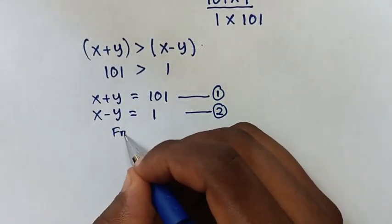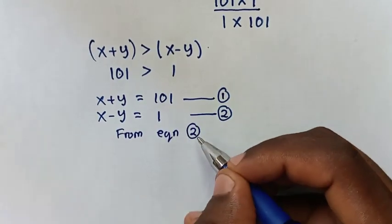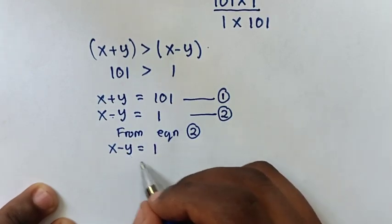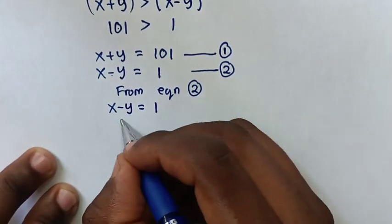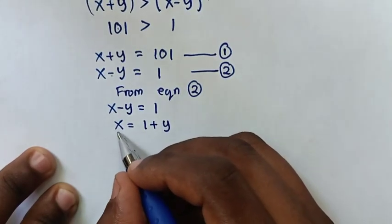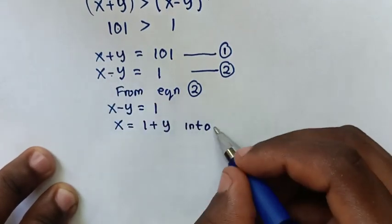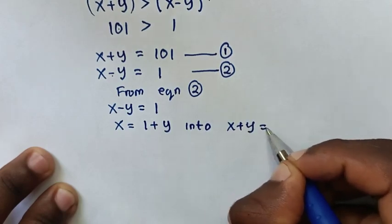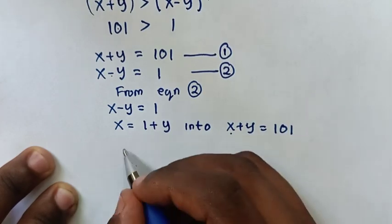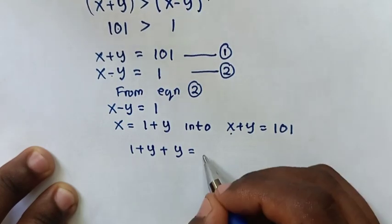From equation 2, x minus y equals 1, we take negative y to the right side, giving x equals 1 plus y. We then substitute this value of x into equation 1, which is x plus y equals 101, giving us 1 plus y plus y equals 101.